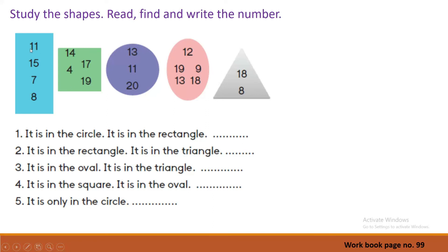Now look at the rectangle. What are the numbers? We can see 11, 15, 7, 8. Very good. Then look at the square. What are the numbers? 14, 17, 19, 4. Very good.